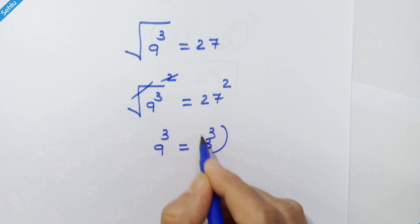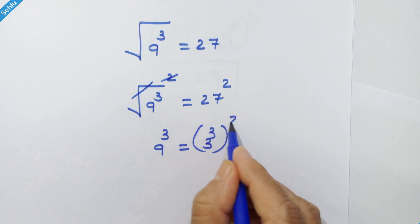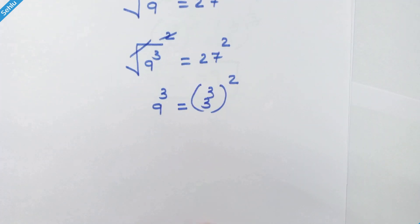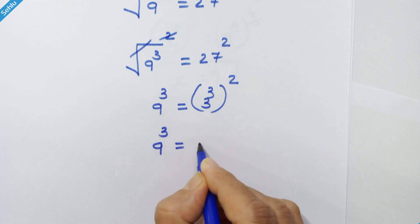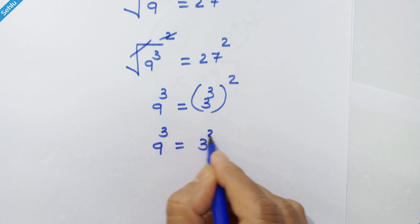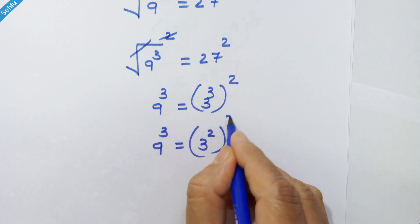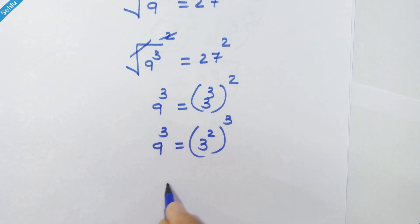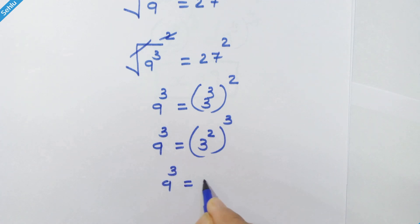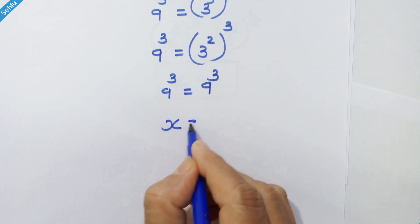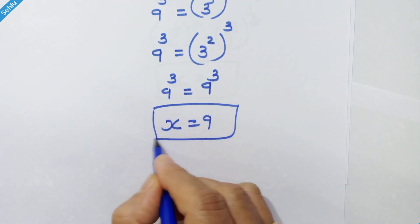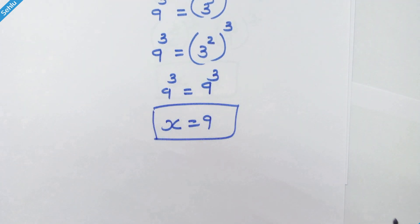Now we can flip this, so we have 9 cube is equal to 3 square whole cube. 3 square is 9, so 9 cube is equal to 9 cube. So x is equal to 9 is the correct answer.